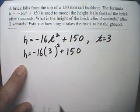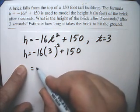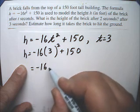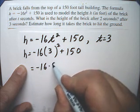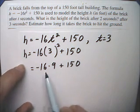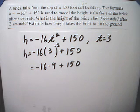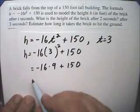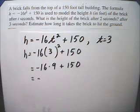And 3 times 3 is 9. So this is going to be minus 16 times 9 plus 150. And I have to do the multiplication first. So I have to do negative 16 times 9. So that answer is going to be negative.